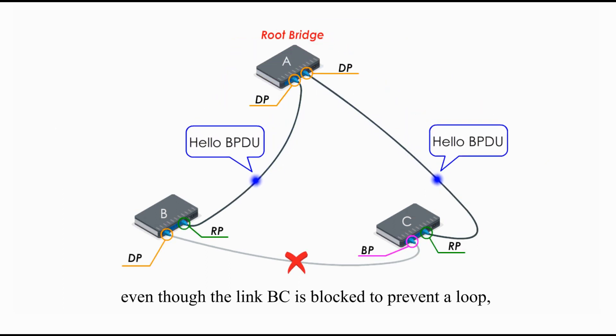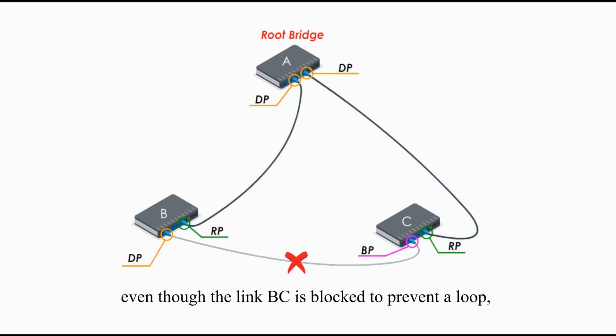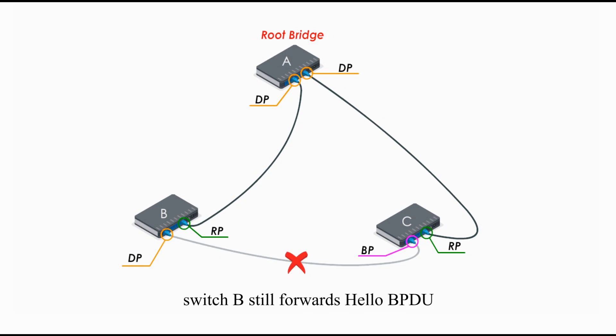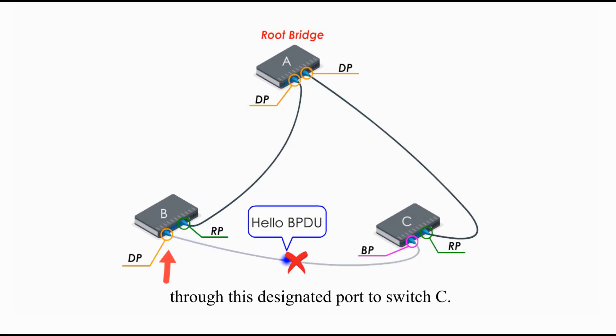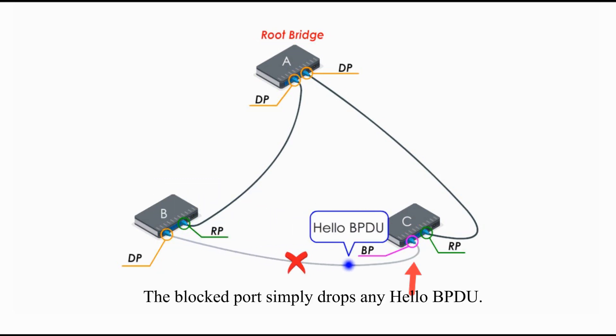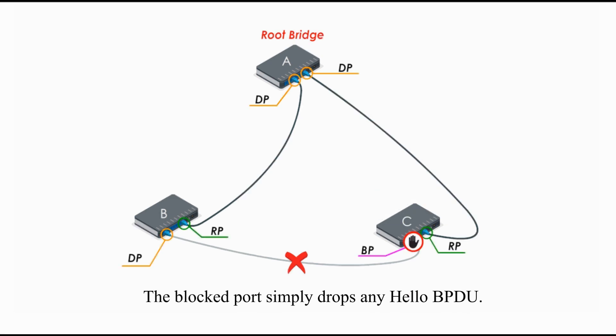In this example, even though the link BC is blocked to prevent a loop, switch B still forwards Hello BPDUs through its designated port to switch C. The blocked port simply drops any Hello BPDUs.